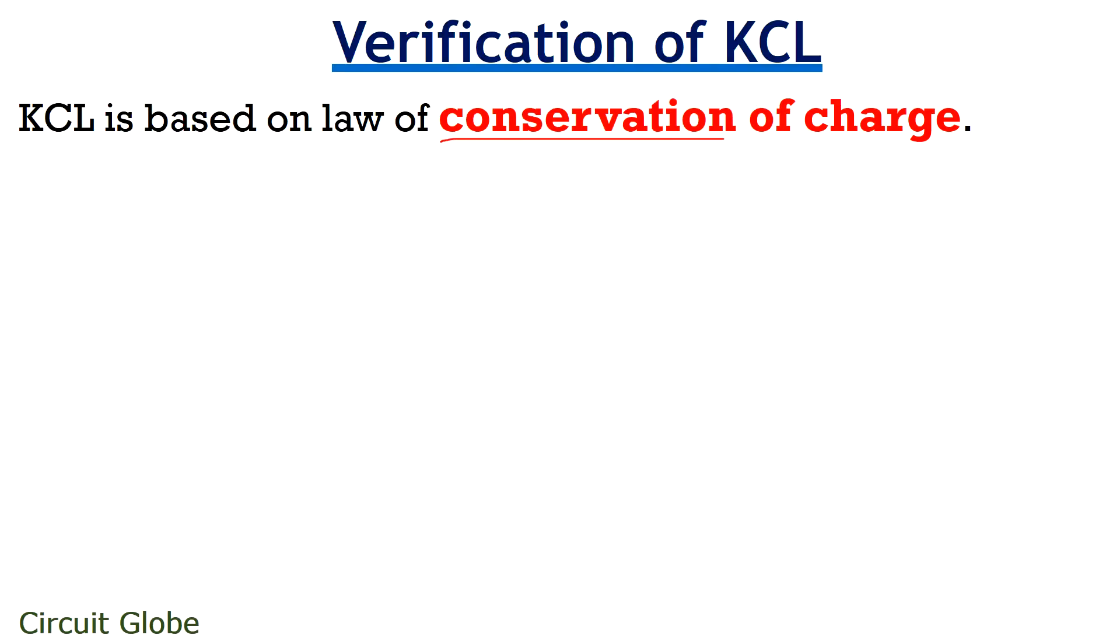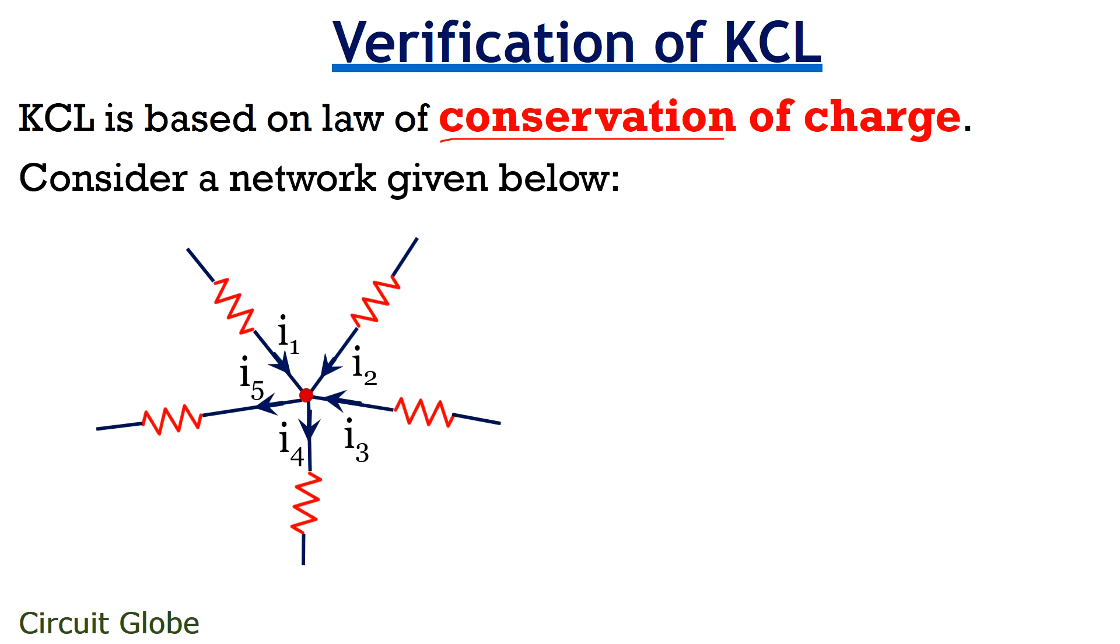Law of conservation of charge is the basis of KCL. And this law states that charge can neither be created nor can be destroyed. It can only be transferred from one system to another. To understand this, consider the network shown here. As we can see that this network is composed of five branches.